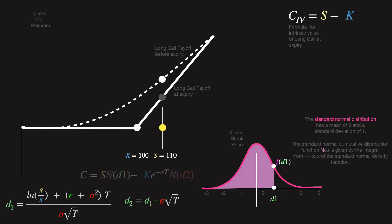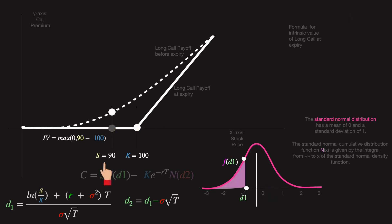Let's consider a decrease in the stock price from $120 to $110. When the stock price decreases to $110, the values of D1 and D2 will decrease, since the stock price is part of the calculation for D1 and D2. This in turn will affect N(D1) and N(D2), which are the areas under the standard normal distribution curve up to the points D1 and D2 respectively. Let's see how this affects our call option price.